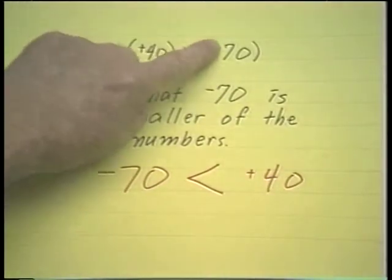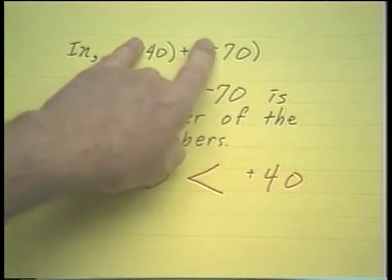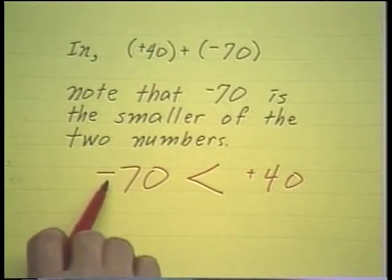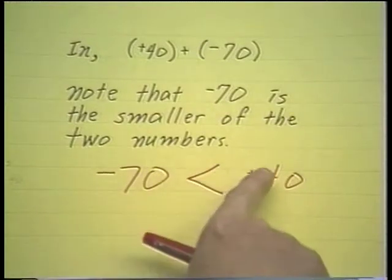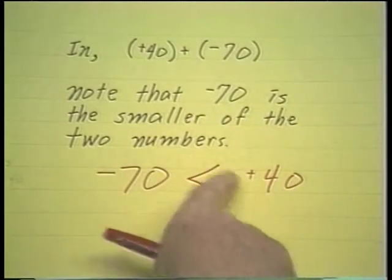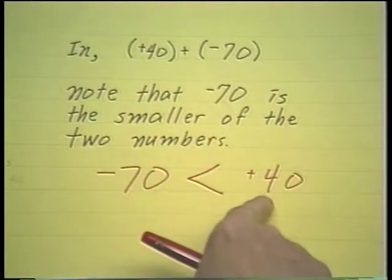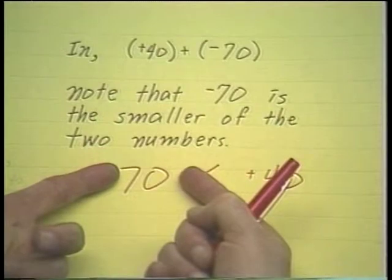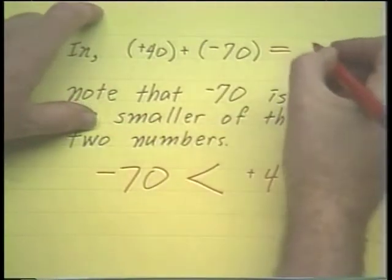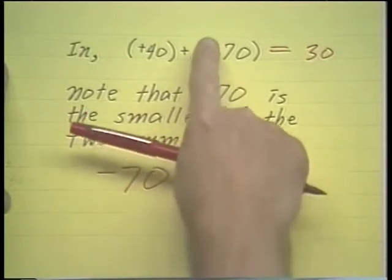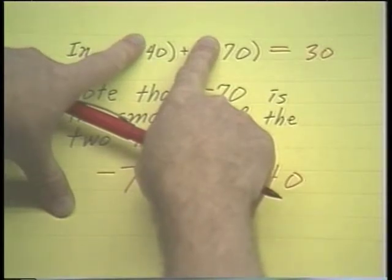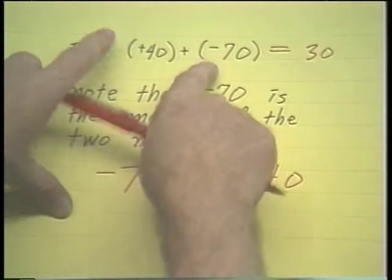If you just look at that, you say 70 is larger than 40. That's true, but we don't have 70 — we have negative 70. Surely 70 degrees below zero is colder than 40 degrees above zero, and 70 dollars in debt is having less money than 40 dollars credit. So don't confuse that number with that number. When we added these two, we took the difference between their absolute values, which is 30. And even though negative 70 is the smaller number, it has the larger absolute value, so we give the answer a negative sign.